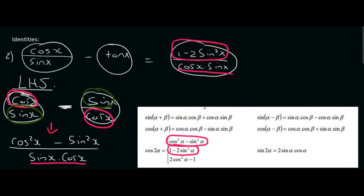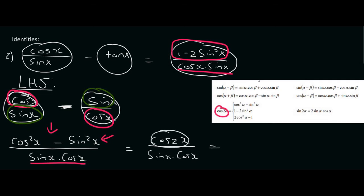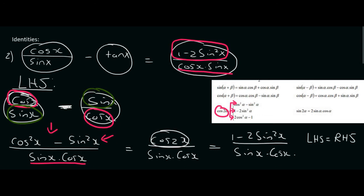Bringing up the grade 12 formula sheet, we can see that cos squared x minus sin squared x at the top corresponds to cos of 2x. So we change the top part to cos 2x, and the bottom part stays the same — sin x times cos x. Remember, at this step you never want to divide these two, because even with the 2 there they are not the same. Then we know that cos 2x is the same as one minus 2 sin squared x. Substituting that in and keeping the bottom the same, we can say left hand side equals right hand side.